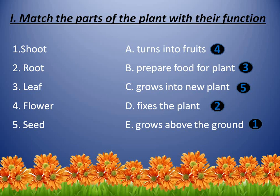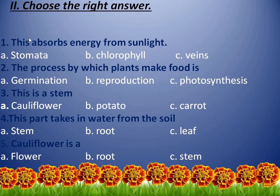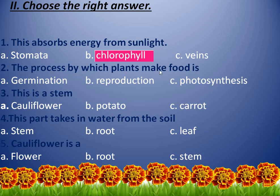Very good. Now next, choose the right answer. First: this absorbs energy from sunlight — stomata, chlorophyll, or veins? The answer is chlorophyll. The process by which plants make food is? Yes, photosynthesis.